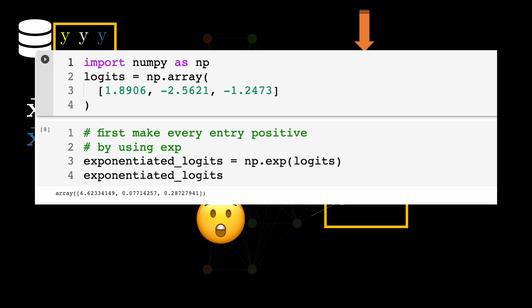But note that this is not a probability distribution because the entries should be greater than or equal to 0 or less than or equal to 1. Here we see that the first entry is 6.6. So even though the numbers are all positive, it is still not a probability distribution.